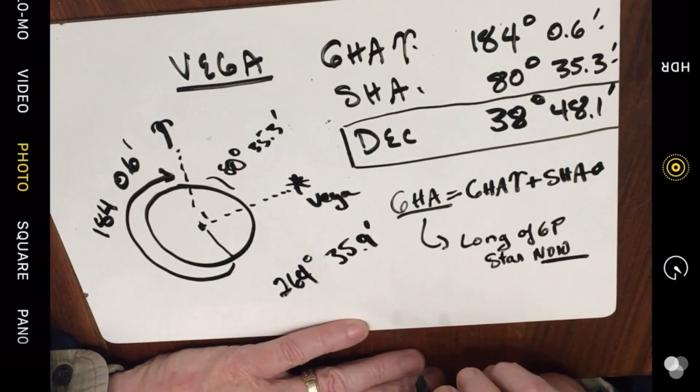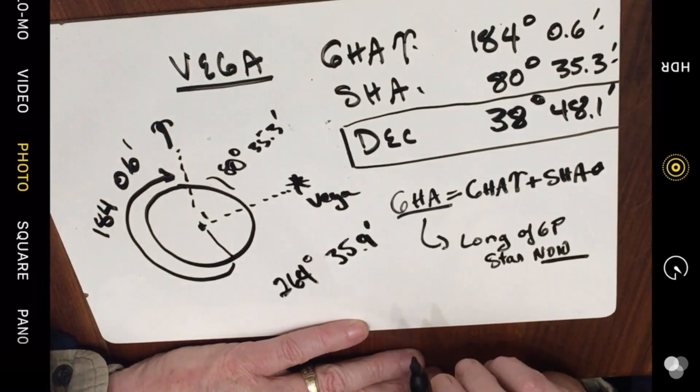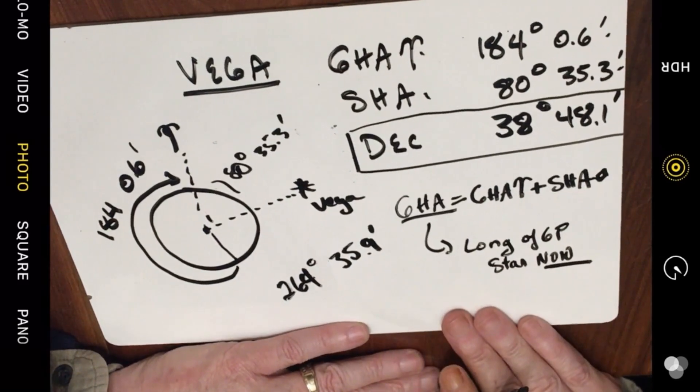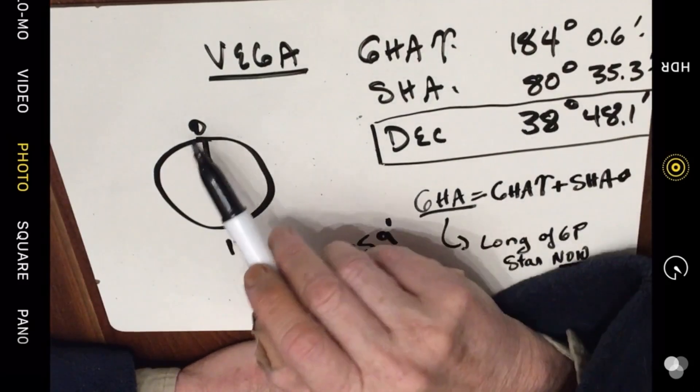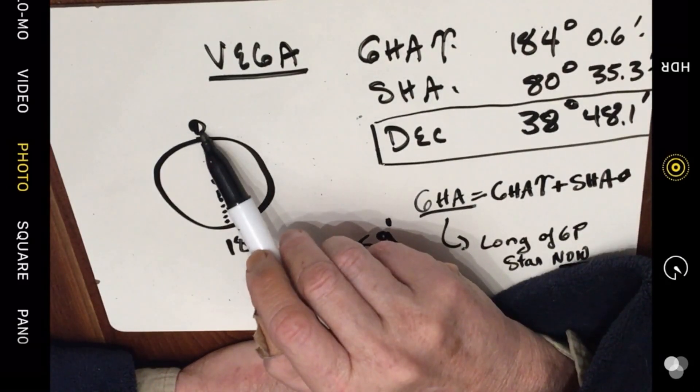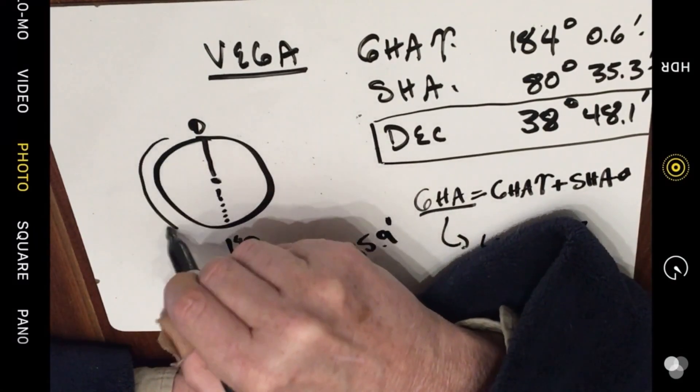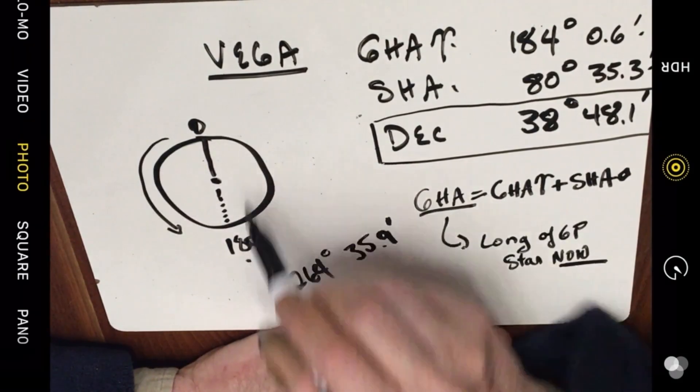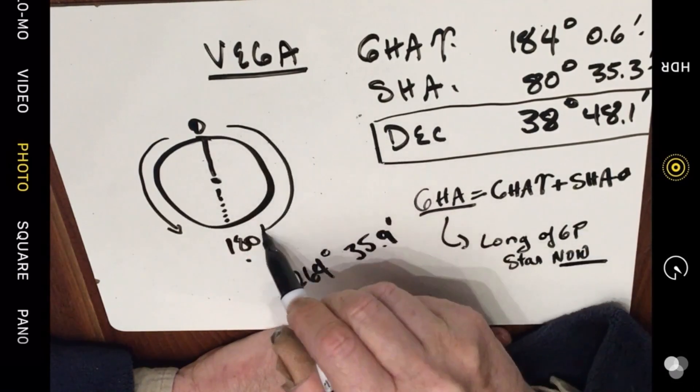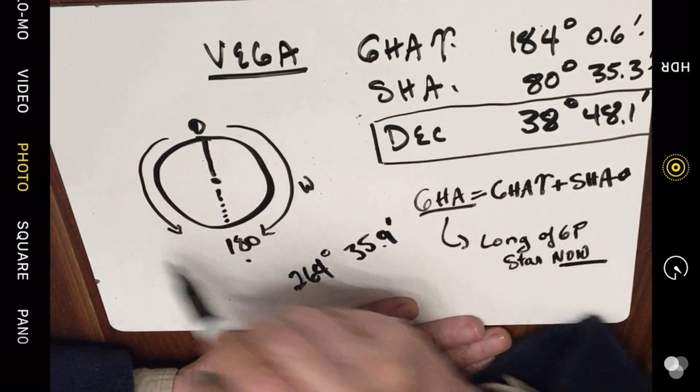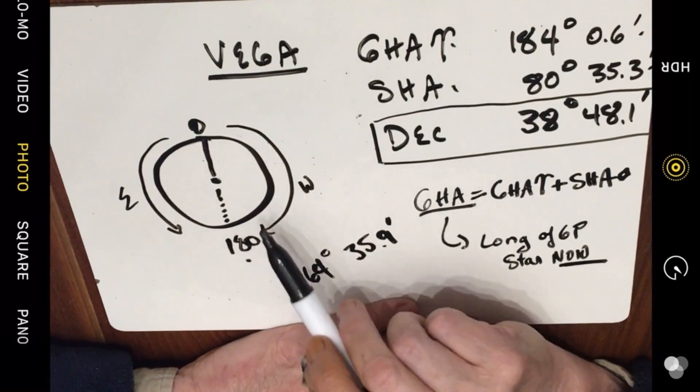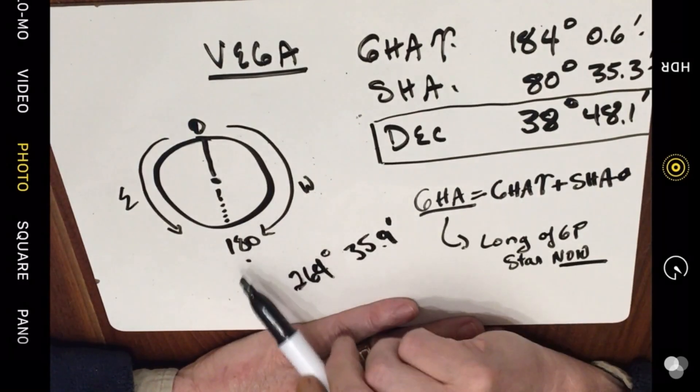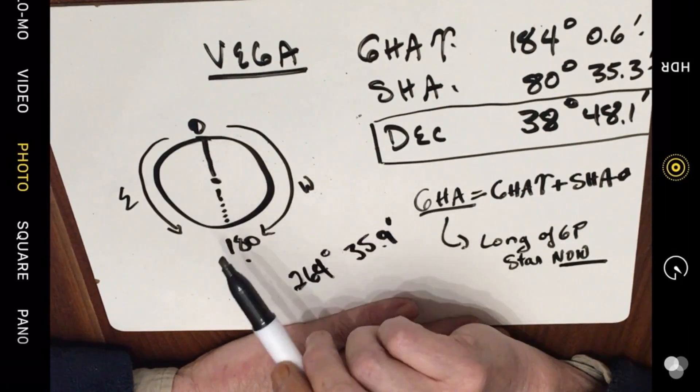There's a slight difference when it comes to dealing with longitude and dealing with the Greenwich hour angle. Now when you're dealing with longitude, you start at a prime meridian of zero. You go all the way east to 180 and you go all the way west to 180. So there are no lines of longitude that are greater than 180 degrees or less than zero degrees.